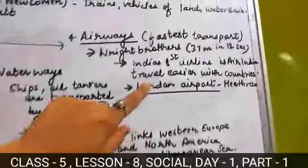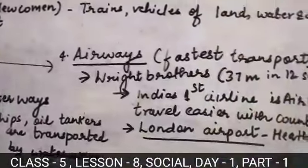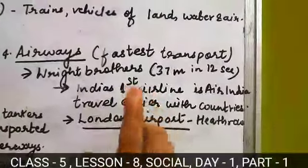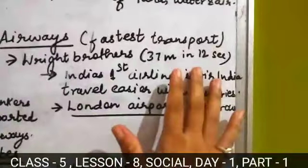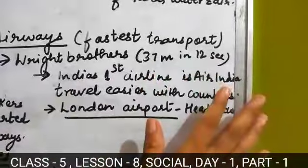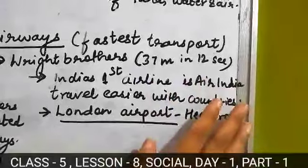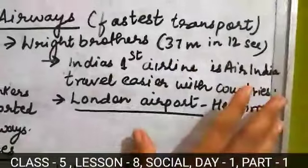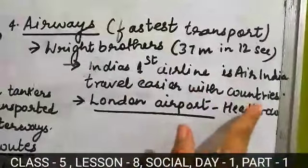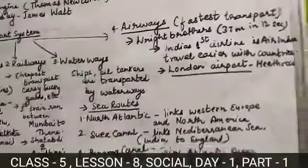Number 4 is airways. Airways is the fastest transport. The Wright brothers invented the first aeroplane, which ran 37 meters in 12 seconds. India's first airline is Air India, which made travel easier with other countries. The London airport is known as Heathrow.